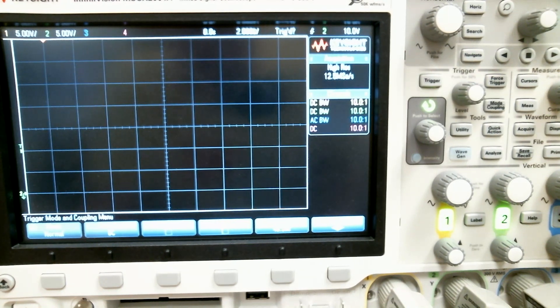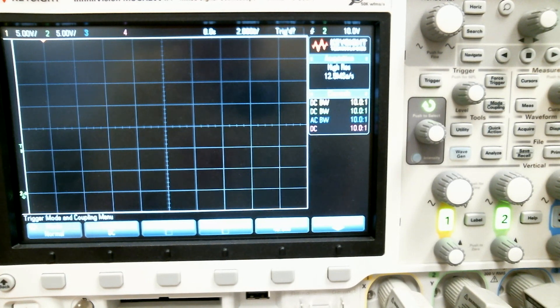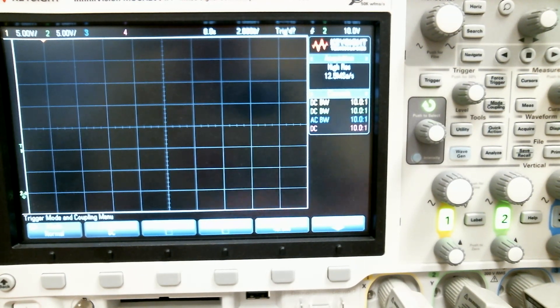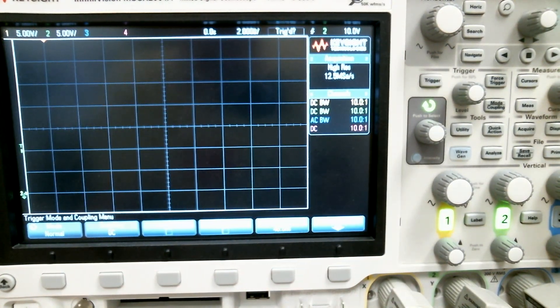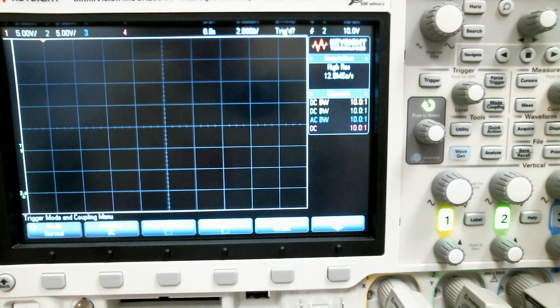Really what auto does is it waits for a trigger, and if the scope gets tired of waiting for a trigger event because one hasn't happened, it will just go ahead and trigger anyway. And this is where we get the waveforms that jiggle around, because the scope is just triggering when it wants to, and not at a defined trigger event.